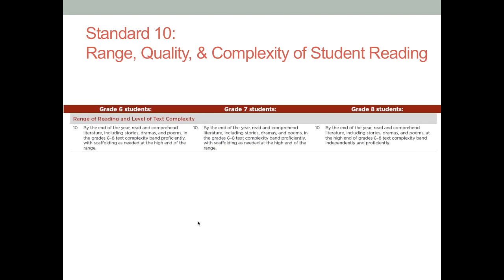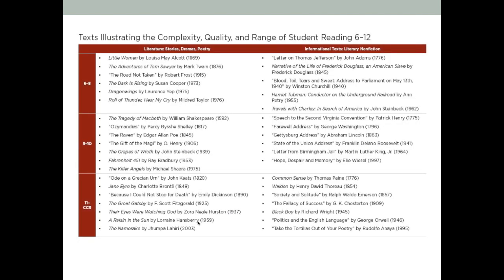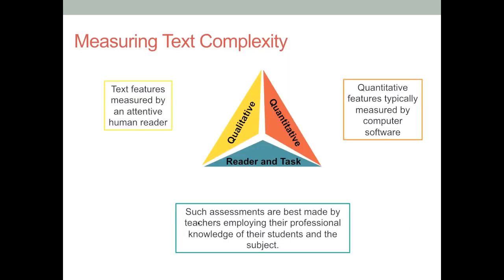The Common Core writers identified a set of texts that they believed exemplify that complexity, quality, and range over the school years. They also identified three ways of establishing that texts are increasingly more complex.